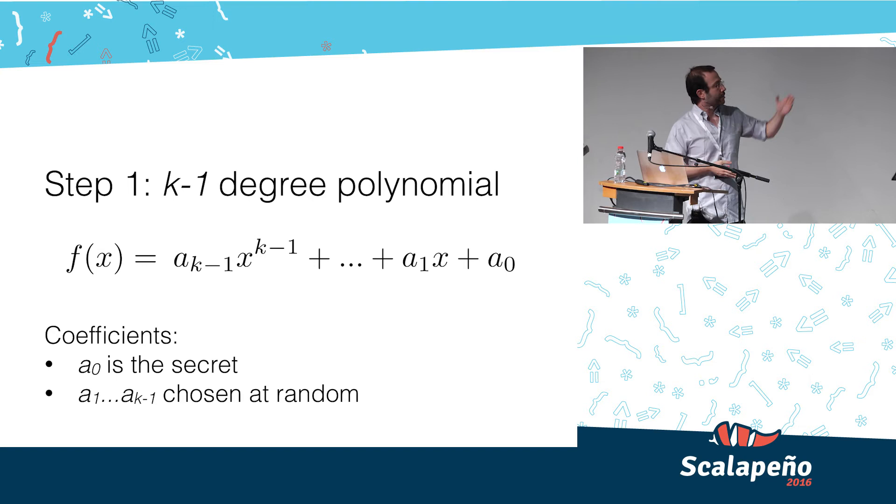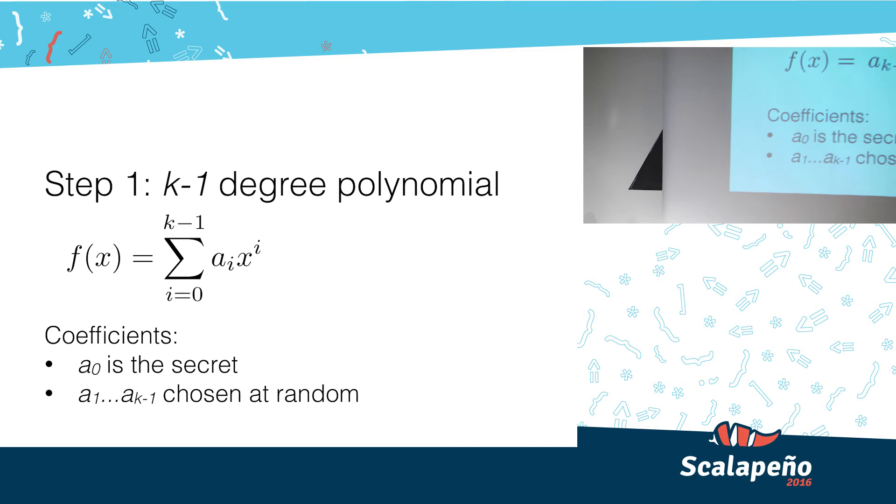Here we have, bless you, in order to first thing we have to assemble the polynomial. We have our secret that we want to protect, and that secret is the least significant coefficient. And the rest, K minus one coefficients, we choose at random.